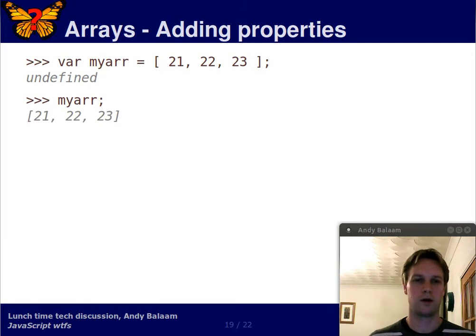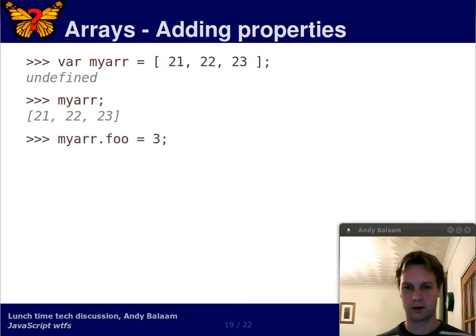Well, Firebug will respond with 21, 22, 23, which is not unreasonable. That's what you might expect, right? It's an array with these three values. So, surely, because this is an array, this next line doesn't make sense. Why would you be able to set the foo property of an array?